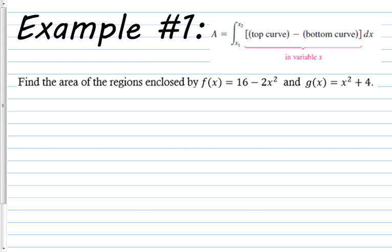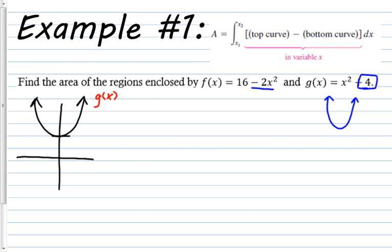For example, both of these are quadratics, so they're both parabolas. g(x) is just a parabola, a normal one, but the 4 tells me it's 4 units up. So here's g of x. And then f of x is also a parabola, but it's a negative parabola, and it has a 2 in front of the x squared. So it's actually a thinner parabola, but what's really important is that it's upside down.